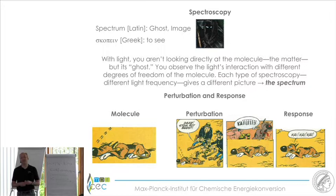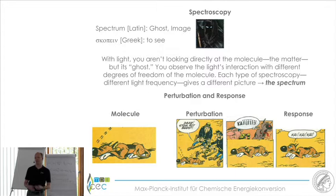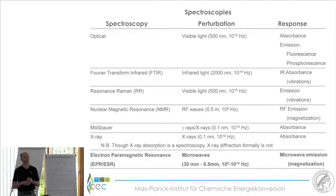In EPR and NMR spectroscopy, this response does not have to be instantaneous. We can apply microwave pulses to the system — we perturb it and then it will take some time before the molecule gives its response. That is basically a summary of what every spectroscopy does: we perturb our molecule and detect the response. The difference between spectroscopies is the wavelength or frequency of the light used to perturb the system.